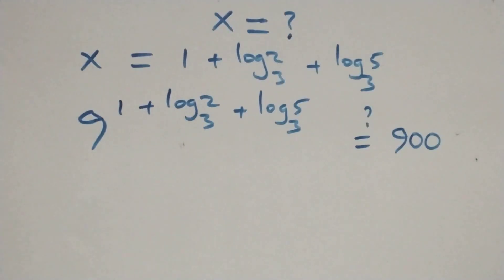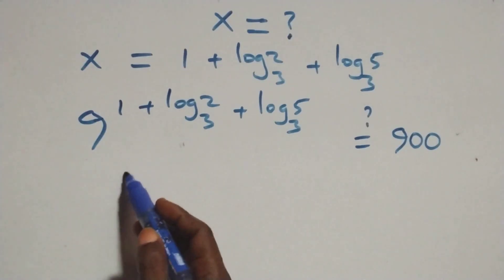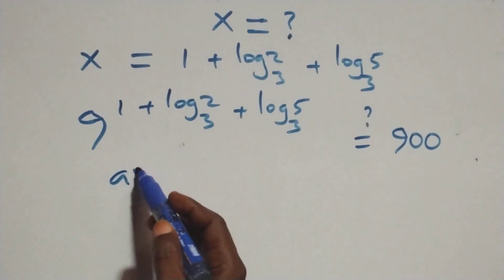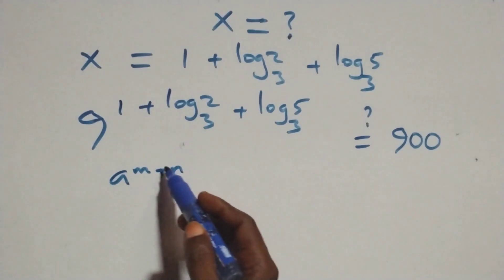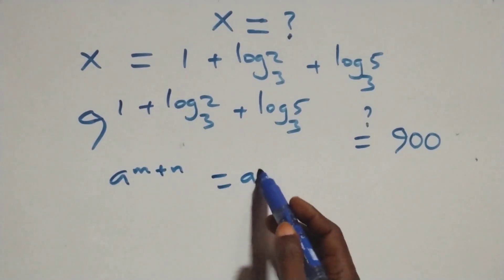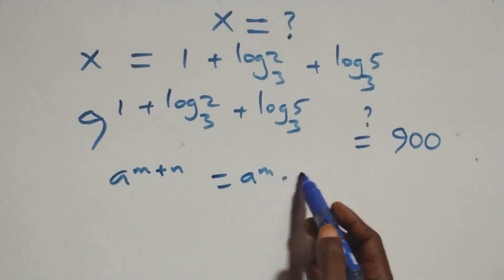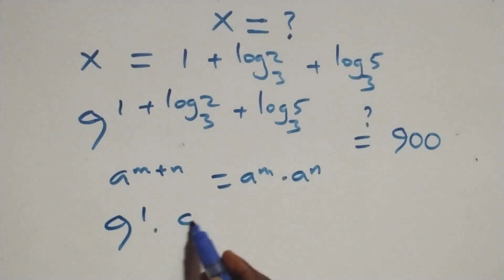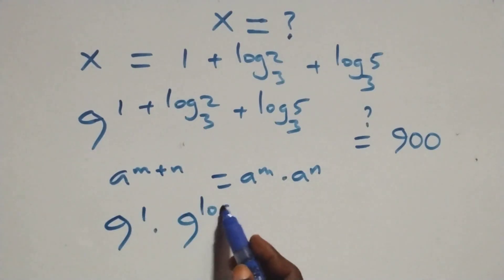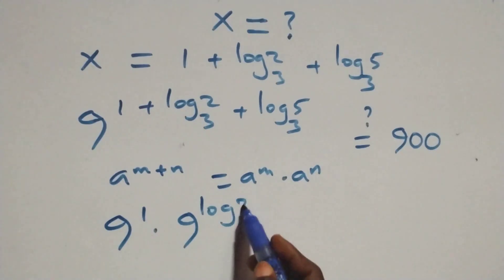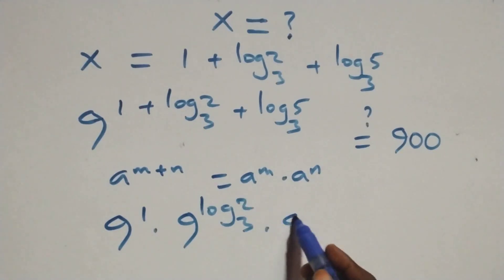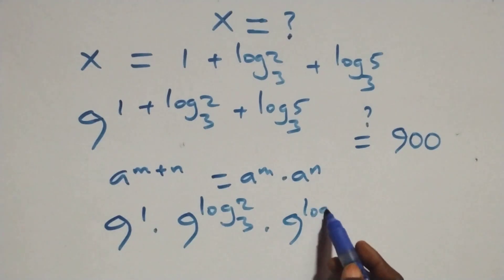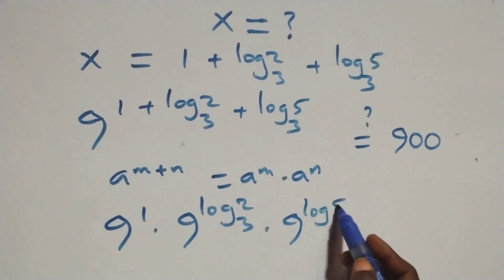Here we apply the law of indices. When we have a raised to the power (n + n), this equals a raised to power n times a raised to power n. So we have 9 raised to power 1, times 9 raised to power log base 3 of 2, times 9 raised to power log base 3 of 5.